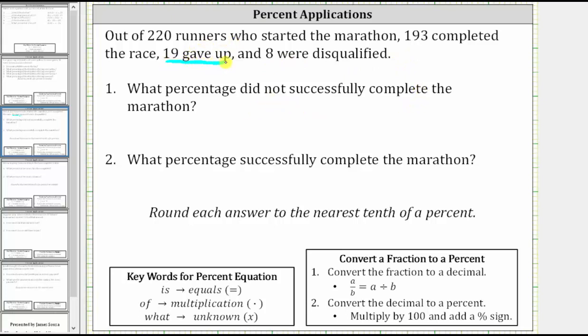Therefore, 19 plus eight, or 27 runners, did not successfully complete the marathon.